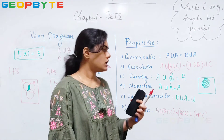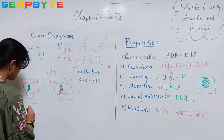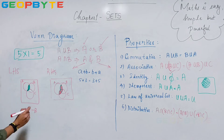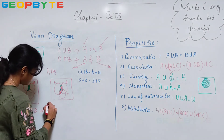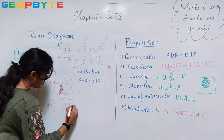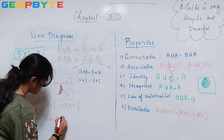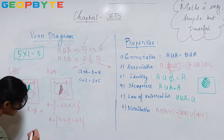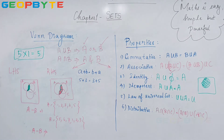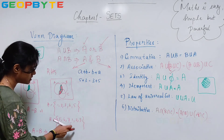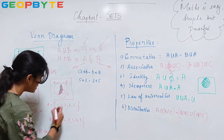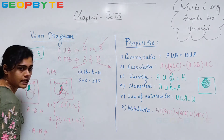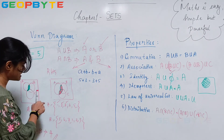Now we have one more thing in sets — another operator: A minus B. That means the elements which belong to A but not belonging to B. For example, if my set A is {1, 2, 3, 4, 5} and B is {5, 6, 7, 1, 2, 3}, then what is my A minus B? That is elements which belong to A and not in B. Element 1 is in B, 2 is in B, 3 is in B, and even 5 is in B. So A minus B is {4} — it is there in A but not in B.